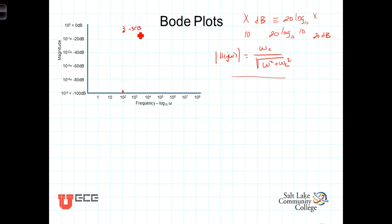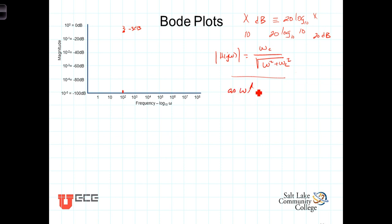From zero out to the cutoff frequency, the response only drops about 3 dB. Now, what happens as we continue to allow omega to increase from the cutoff frequency? As omega gets larger, the omega squared term starts to dominate the denominator. As we get far enough away from ω_c, ω² + ω_c² to a good approximation is just ω². We're covering huge ranges — going from 1 to 100 million radians per second on this graph.